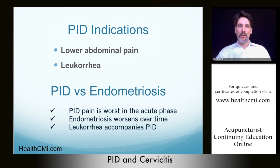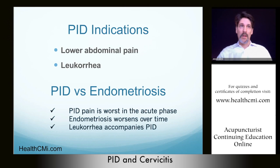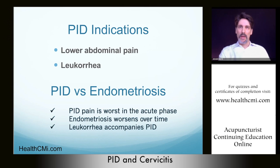Lower abdominal pain and leucorrhea are our key indicators for PID in all cases. Cervicitis, cervical dysplasia, and cervical infections can be complicated because they can be completely asymptomatic. To differentiate PID from endometriosis, the acute stage of PID is typically worst at onset, whereas endometriosis worsens over time as blood stasis builds up due to endometrial tissue. Leucorrhea accompanies PID. A positive pregnancy test will differentiate PID from ectopic pregnancy.